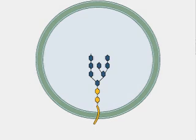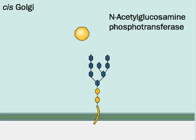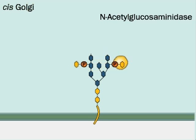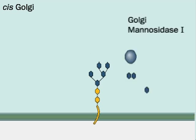Vesicles transport the glycoprotein to the cis-Golgi network, where one of two events occurs. Either N-acetylglucosamines attach to the oligosaccharide and are transported to the lysosomes, or enzymes remove more mannose residues.